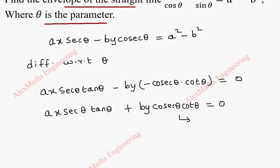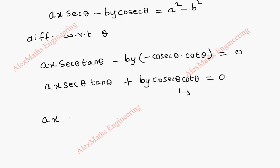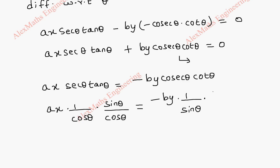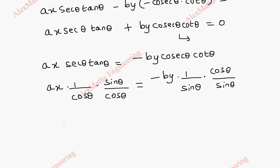Taking the term to the other side, we get Ax into secant theta tan theta equal to minus by into cosecant theta cot theta. Now changing to sin and cos form, we get Ax times (1/cos theta)(sin theta/cos theta) equal to minus by times (1/sin theta)(cos theta/sin theta). Cross-multiplying, this becomes Ax into sin cube theta equal to minus by into cos cube theta.